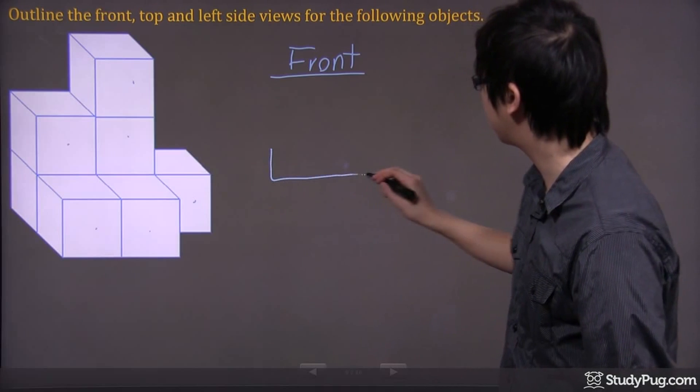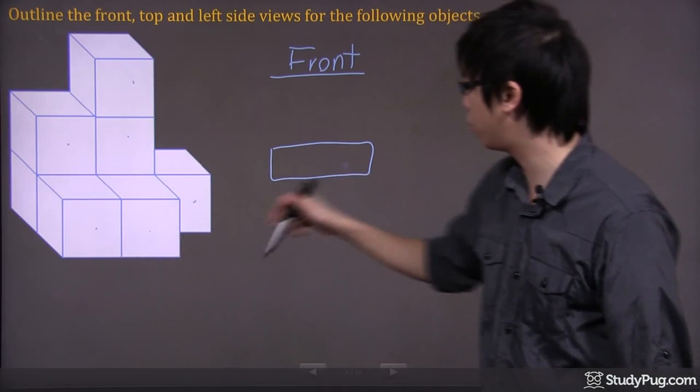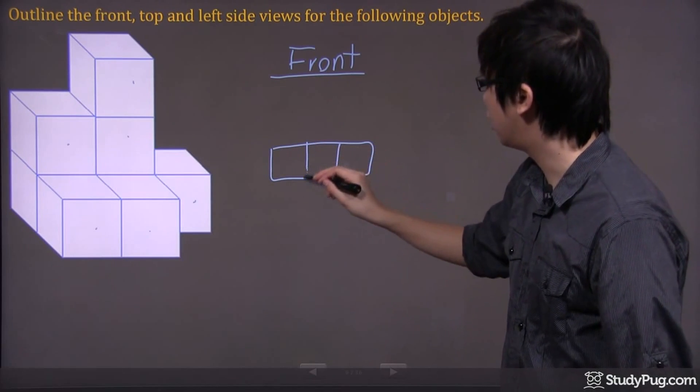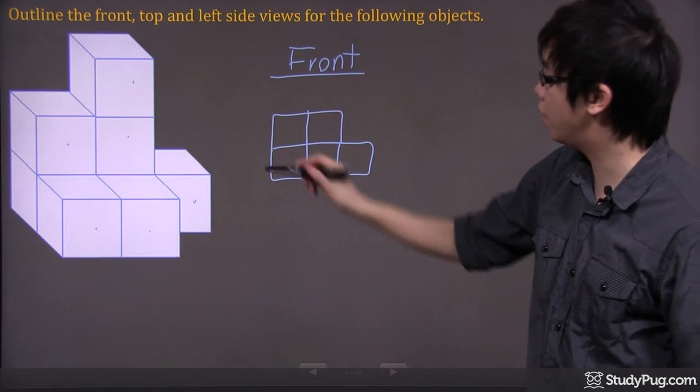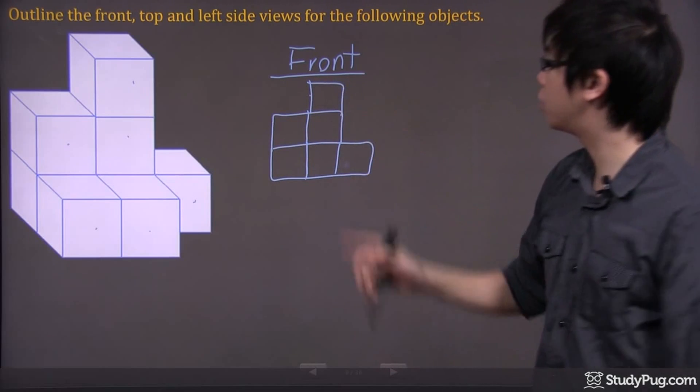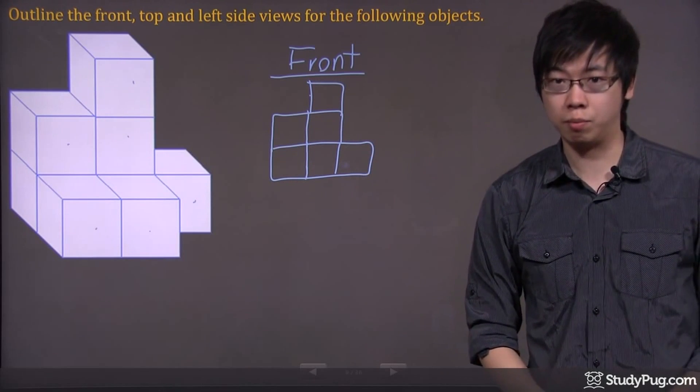So basically, I got a bottom three. Basically one, two, and three, it's all there. And I'll get a top two right here. So there's another two. And finally, there's one more on the top. So that's basically the graph for the front part.